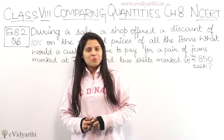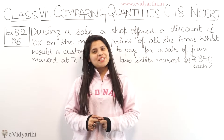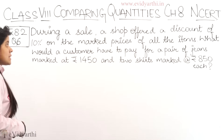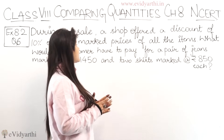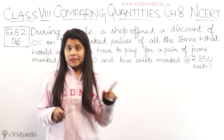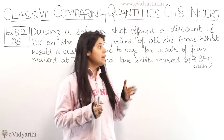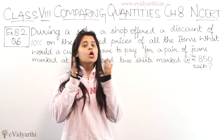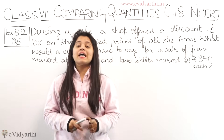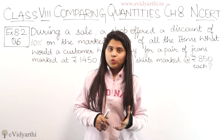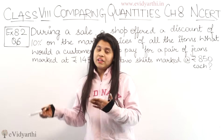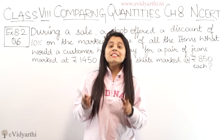Hello everyone, this is Malti from Evitaati.com and coming to question number 6, exercise 8.2. In this question, during a sale, a shop offered a discount of 10% on the marked prices of all items. For example, if something is 50 rupees and it is 50% off, then you get it for 25 rupees. That is discount.